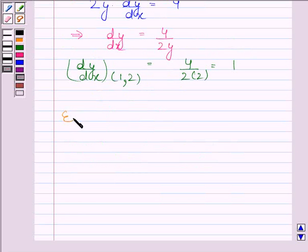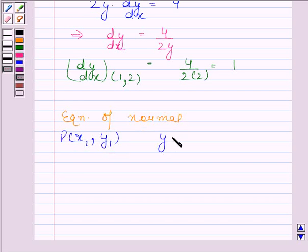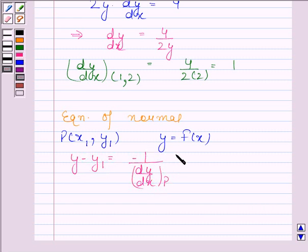the equation of the normal at the point P having coordinates (x1, y1) to the curve y equals f(x) is given by y minus y1 equals minus 1 divided by dy/dx at point P, times (x minus x1).